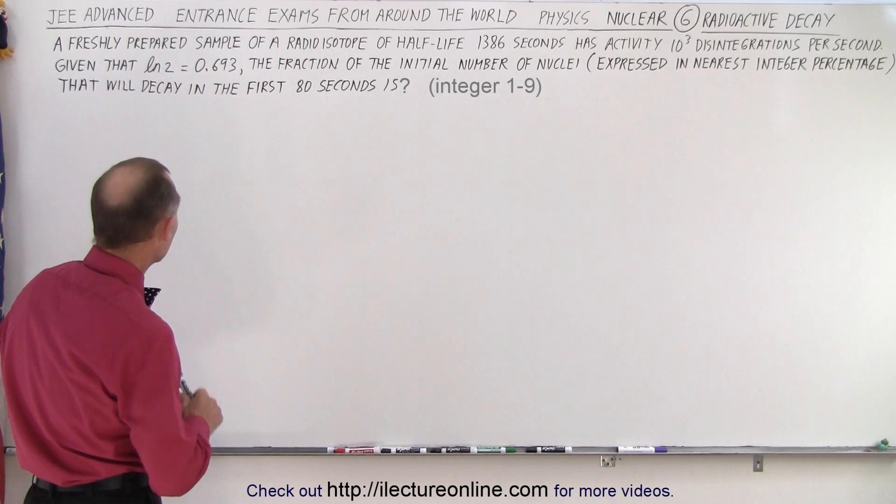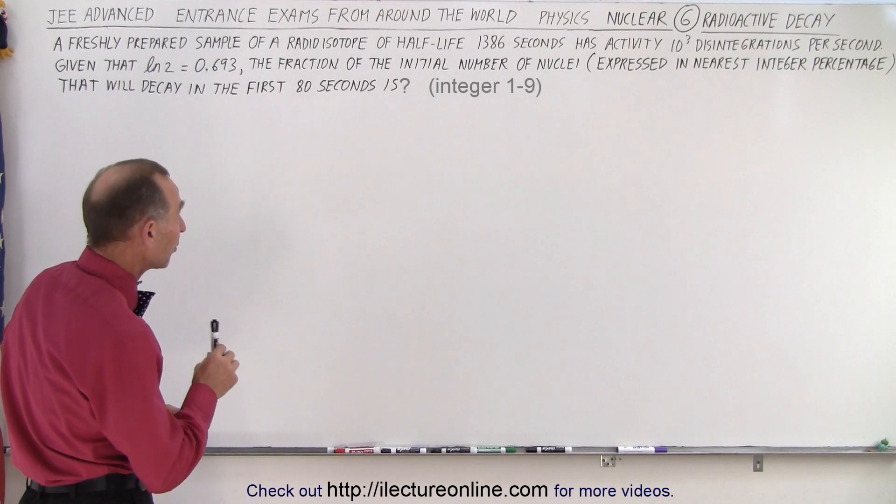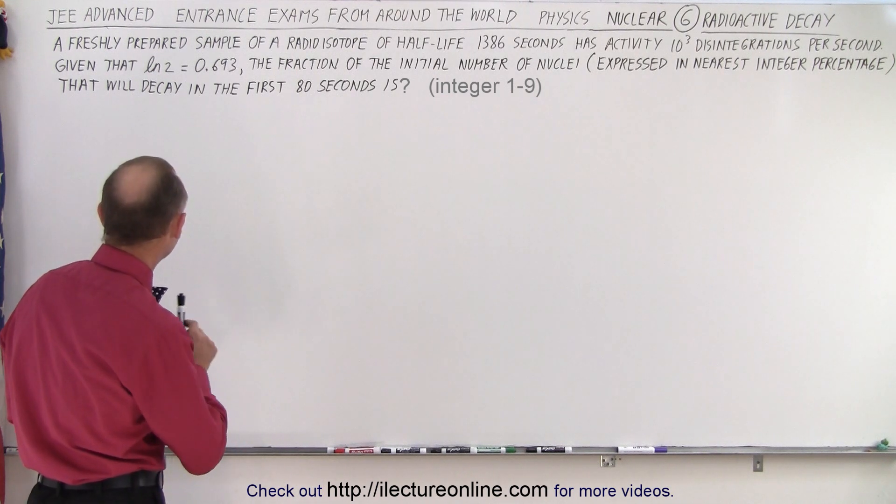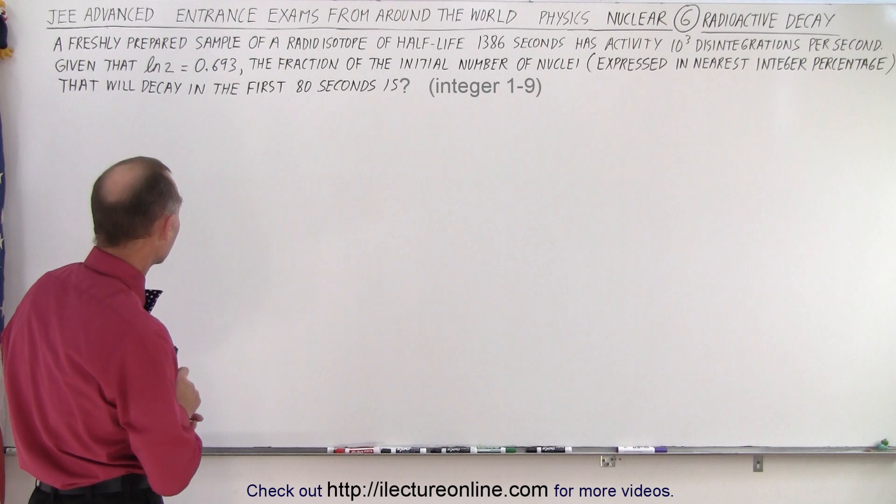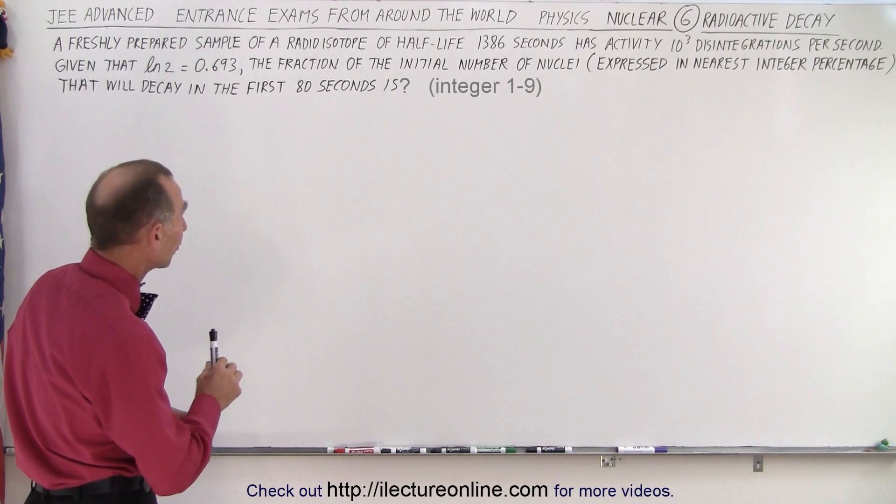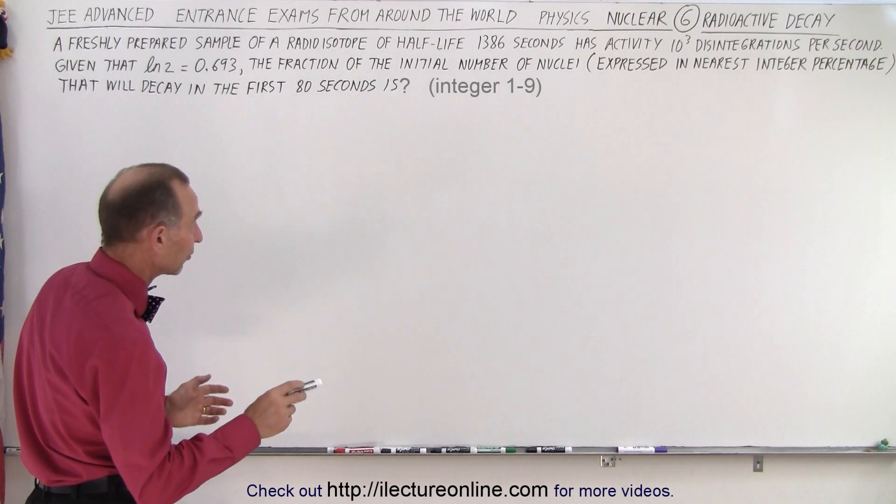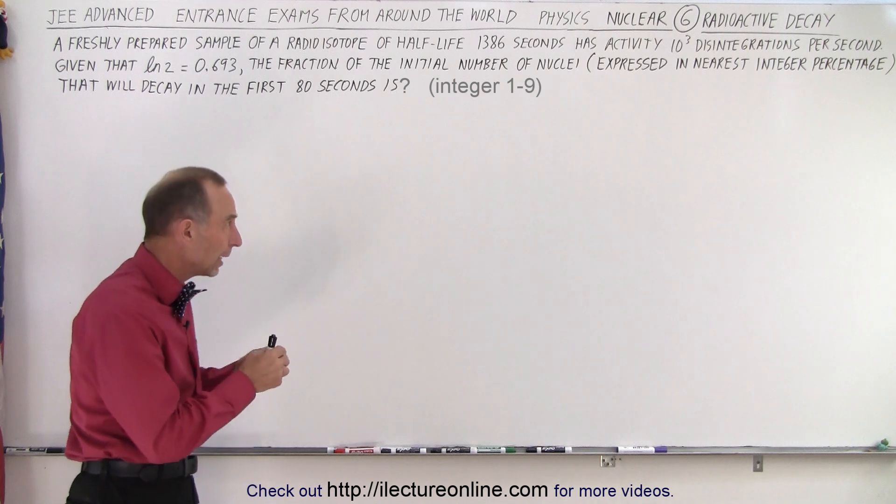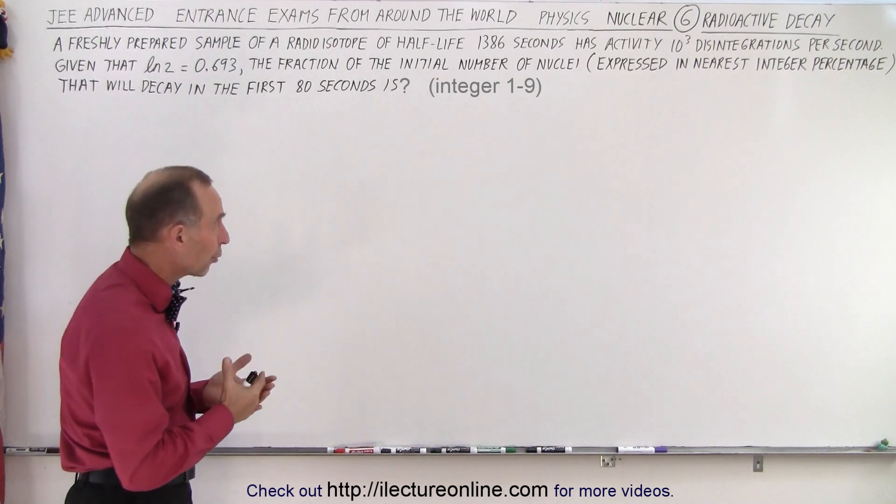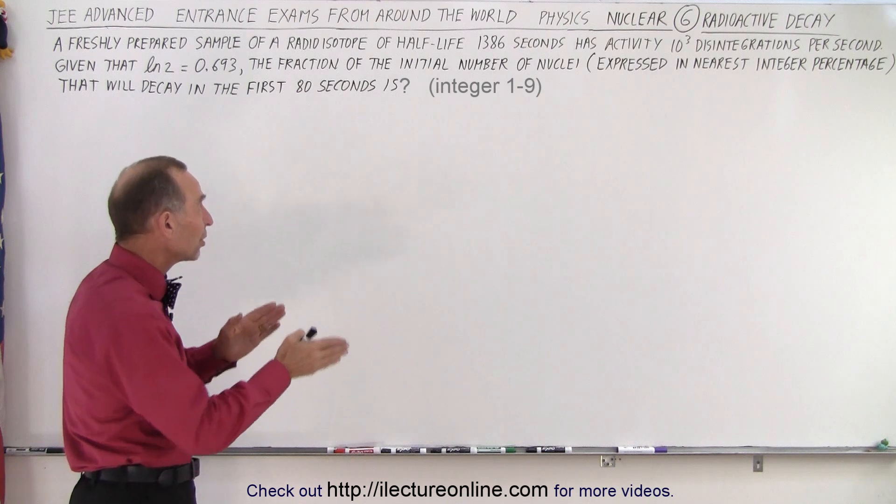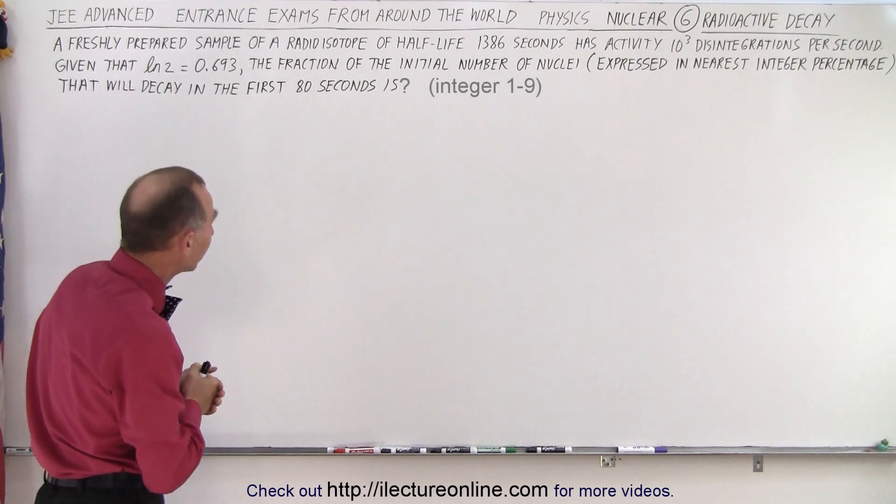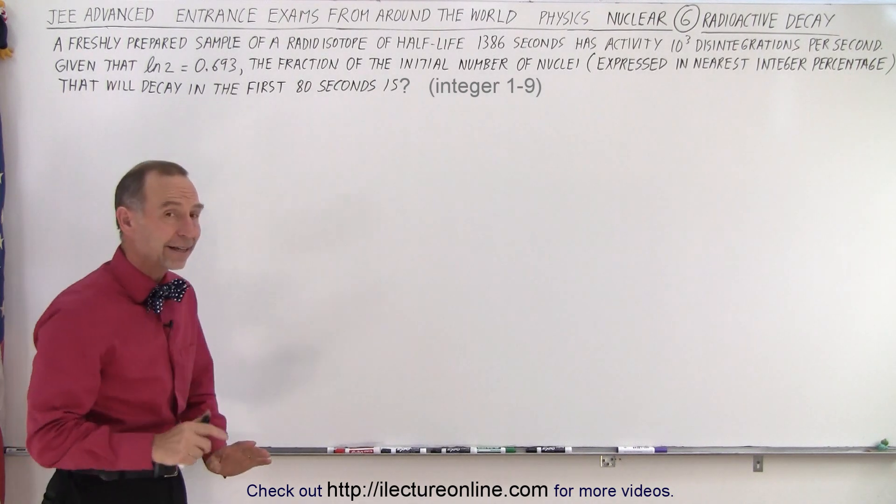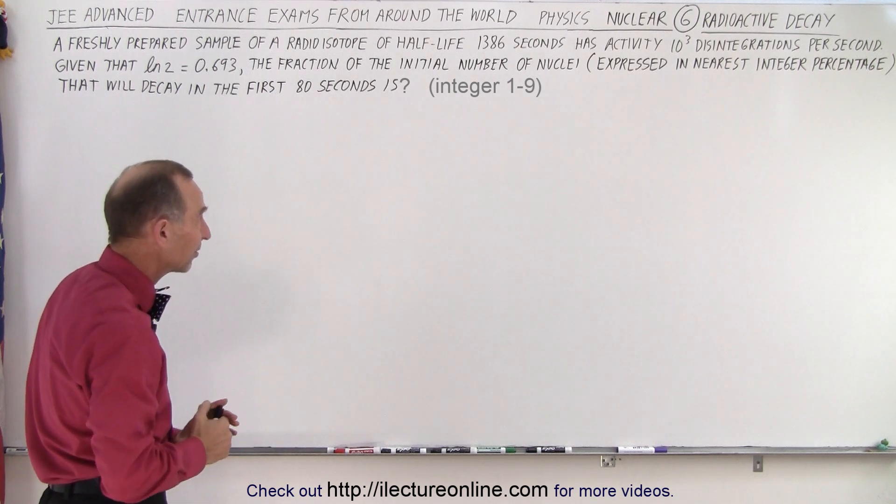But let's see what the problem is all about and let's see if we can do this in three minutes. It says that a freshly prepared sample of a radioisotope of half-life 1,386 seconds has activity of 1,000 disintegrations per second. Given that the natural log of 2 is equal to 0.693, the fraction of the initial number of nuclei expressed in the nearest integer percentage that will decay in the first 80 seconds is... So they're looking for a percentage in integer number format of the original number of active radioisotope elements that will decay in the first 80 seconds given that the half-life is 1,386 seconds.